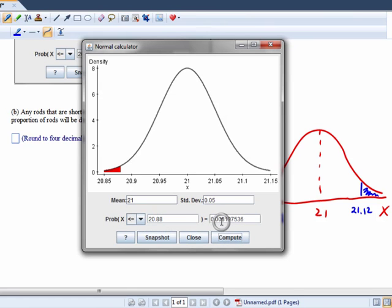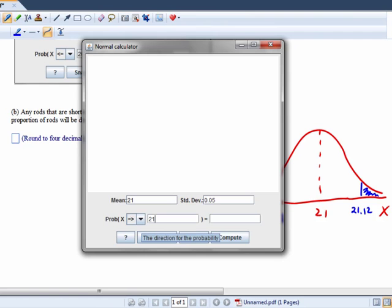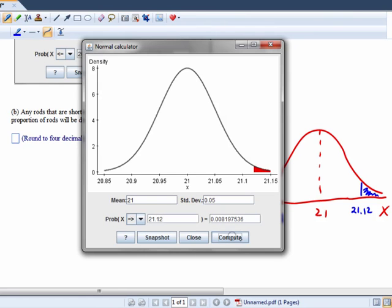Because 20.88 right, and the less than, we get the same area, 0.0082. You see that? Now, if I to verify that what I said is accurate, if I type in 21.12, I get the same value, 0.0082.